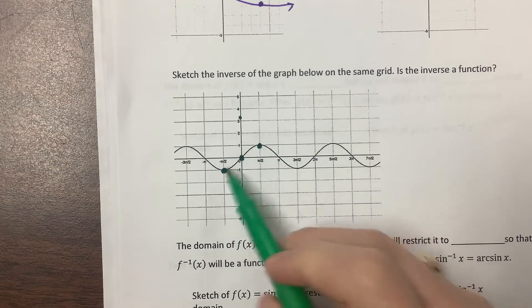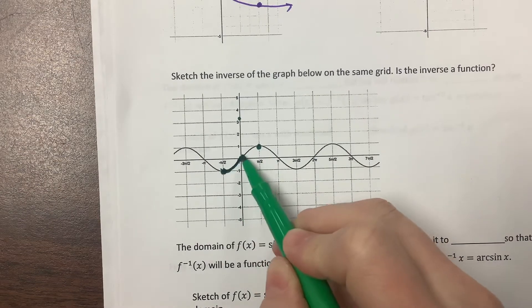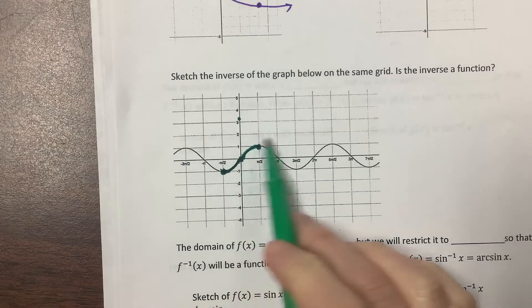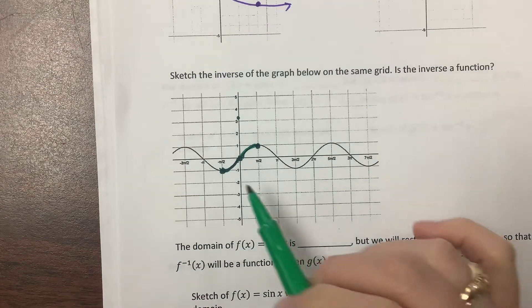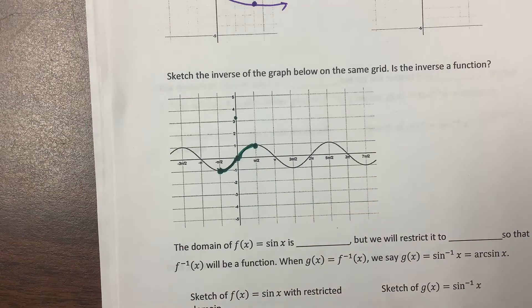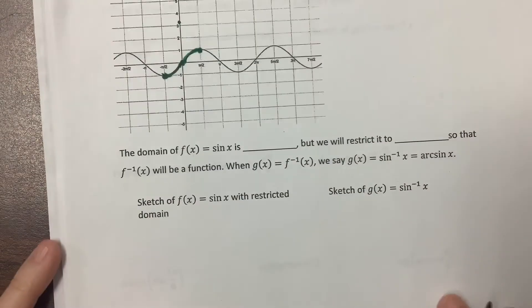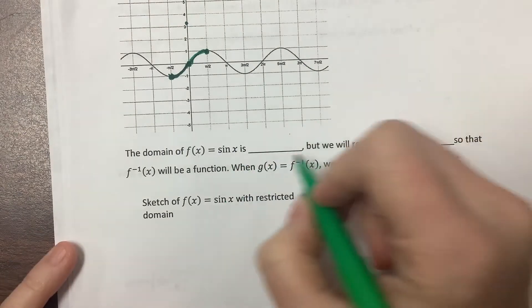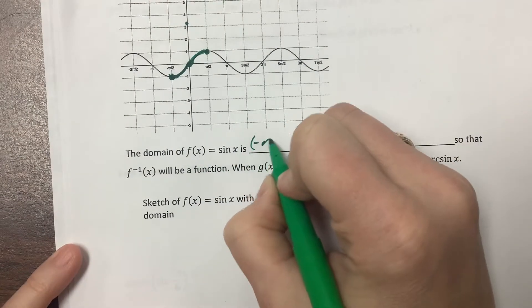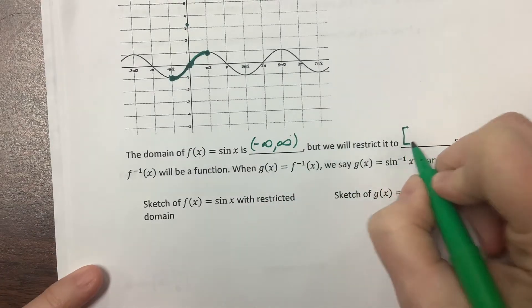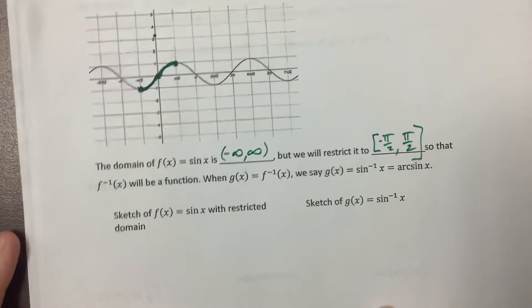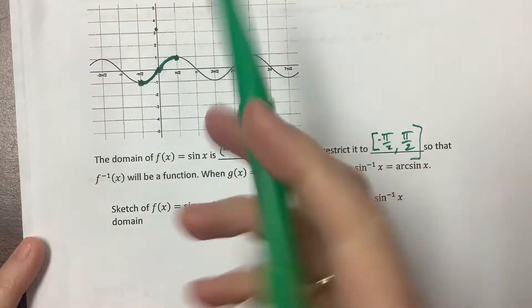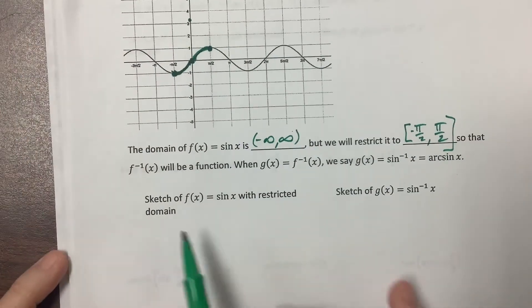Notice this part is concave up and this part is concave down. There's no deep reason we picked this particular piece — mathematicians just agreed on it. So the domain of f of x equals sine of x is negative infinity to positive infinity, but we restrict it to negative pi over 2 to pi over 2, so that the inverse will be a function. This piece passes a horizontal line test, so its inverse would pass a vertical line test.